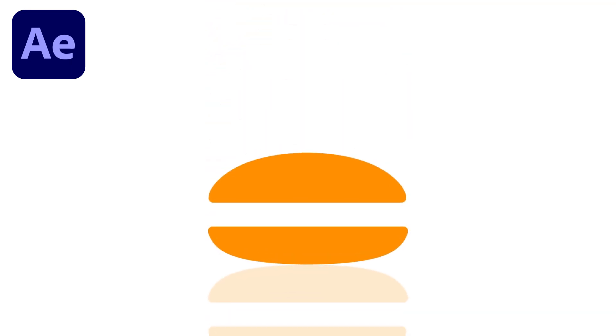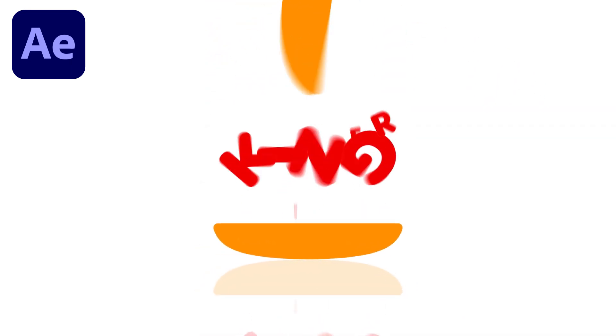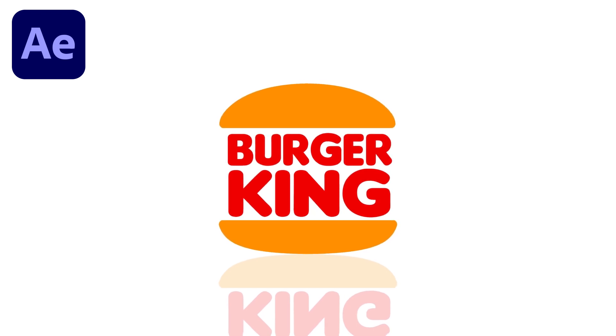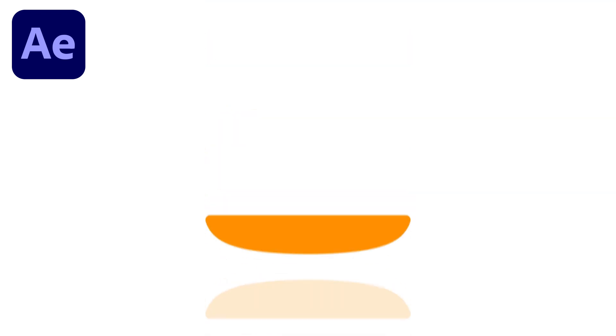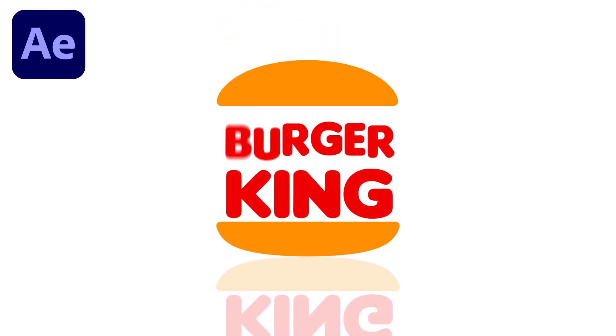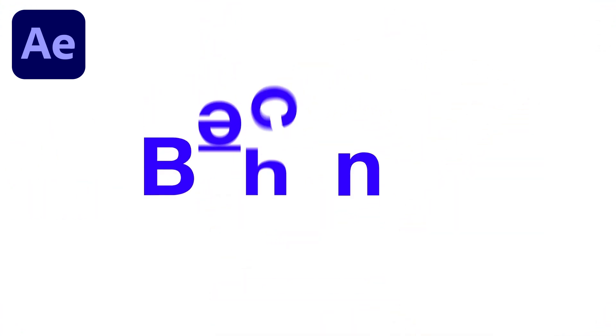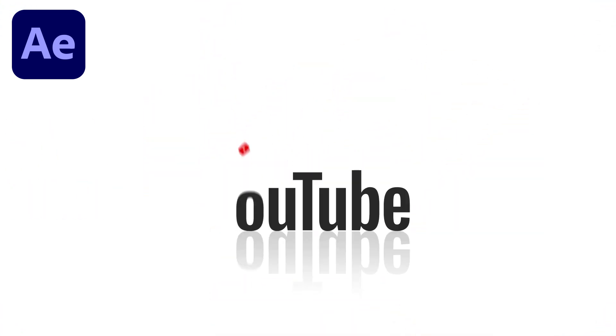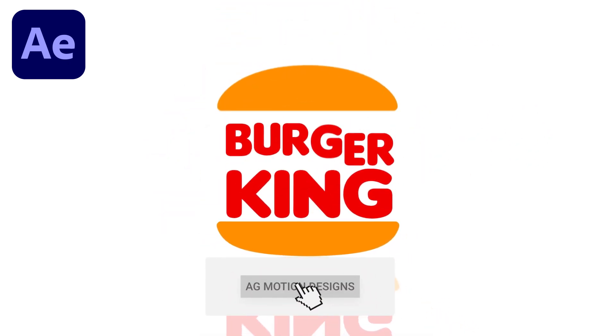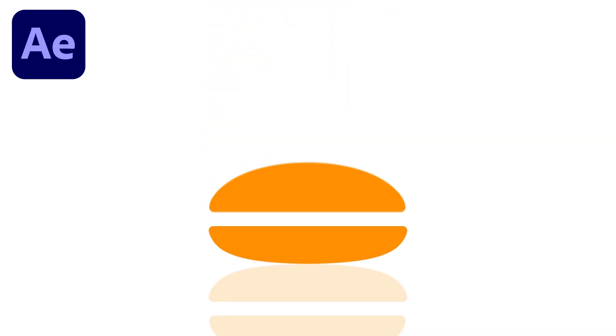Hey guys, welcome back to my channel AG Motion Designs. In today's video we are going to create this Burger King logo reveal animation inside After Effects without using any third party plugin, but with the help of Adobe Photoshop and Adobe After Effects. If you want to learn more about logo animation from scratch, check out my Udemy course — link is in the description. If you are new to this channel, please subscribe and hit the bell icon.